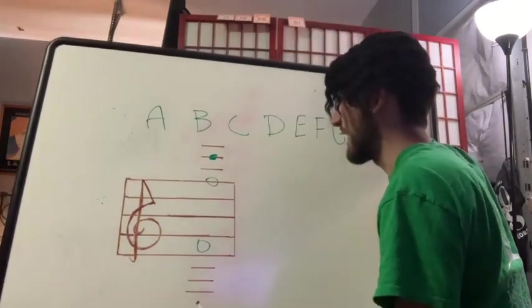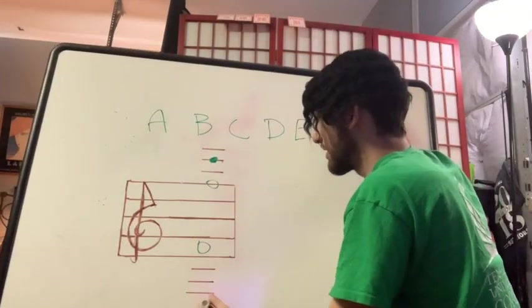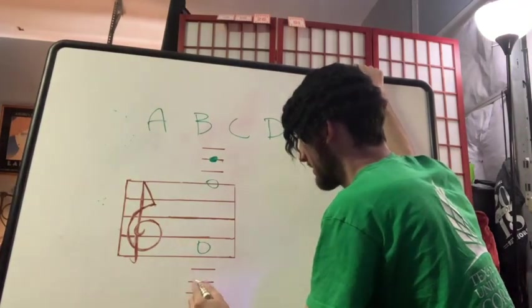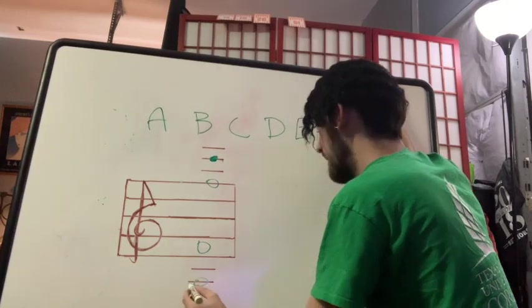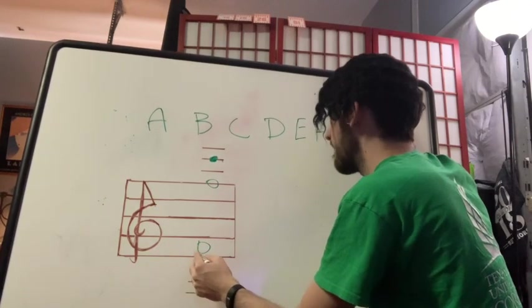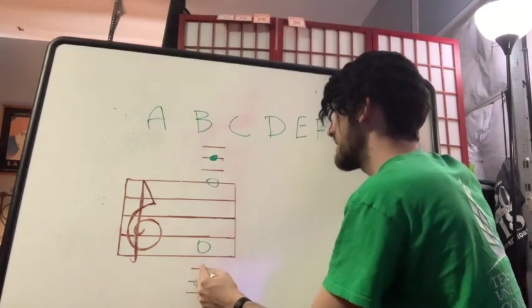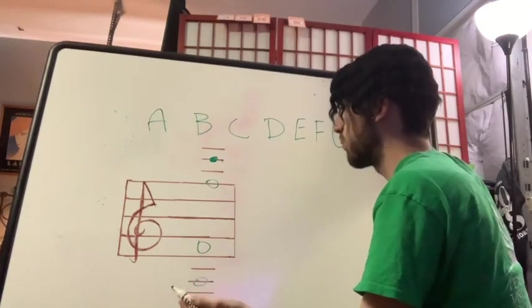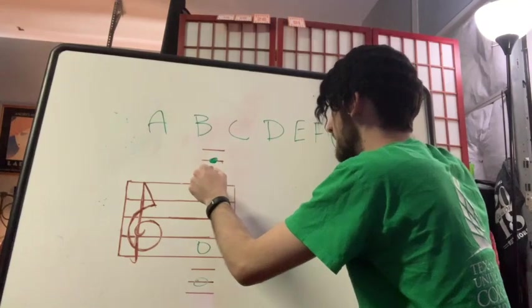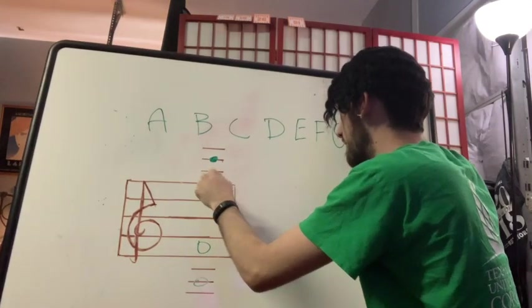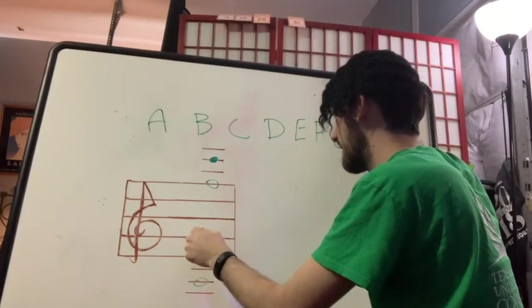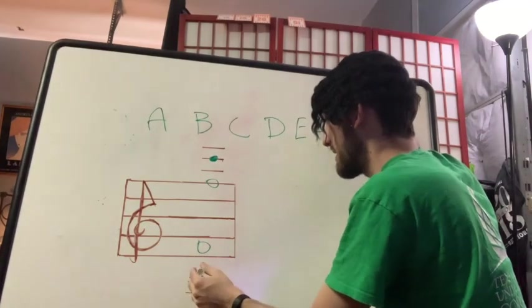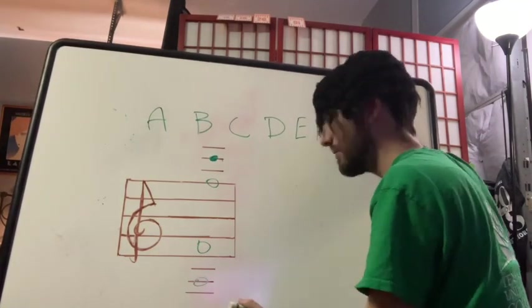And if we were to go down, it would be the same thing. So say we had this note right here. We could go down and say F, E, D, C, B, A. But we know that down from F, this is C, A, F. So we could go F, C, A. Make sense?